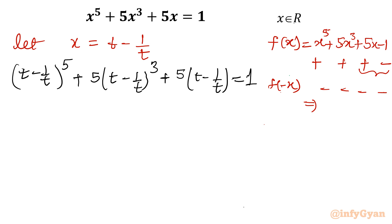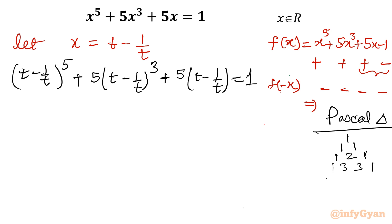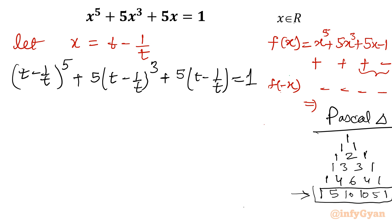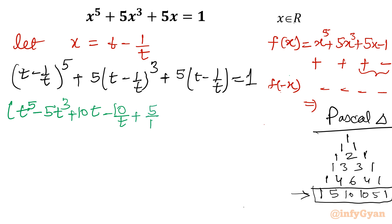Now we need to expand the power 5 and power 3 terms using Pascal's triangle. The coefficients are: row 2 is 1,2,1; row 3 is 1,3,3,1; row 4 is 1,4,6,4,1; row 5 is 1,5,10,10,5,1. Expanding t minus 1 over t whole power 5 gives: t power 5 minus 5t cubed plus 10t minus 10 over t plus 5 over t cubed minus 1 over t power 5.